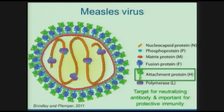The attachment protein — the green one, or the hemagglutinin — is the target for neutralizing antibody, which is one of the main mechanisms by which we develop protective immunity and become immune to subsequent infection with this virus.